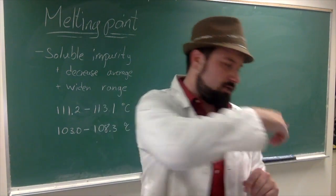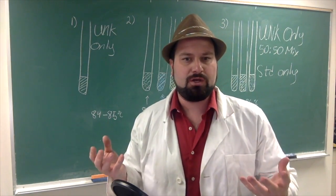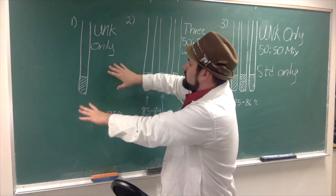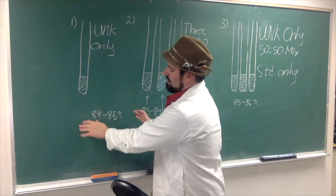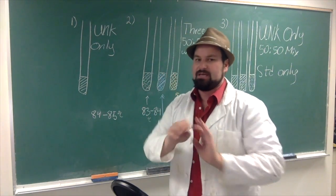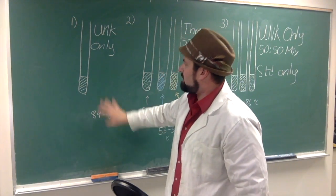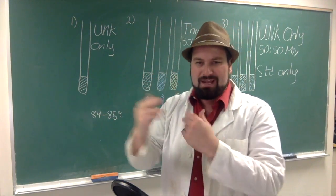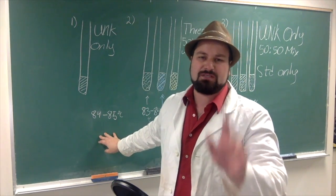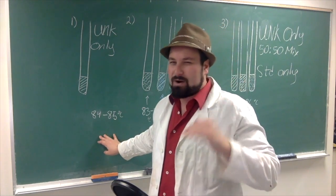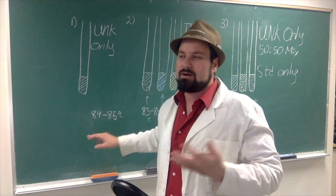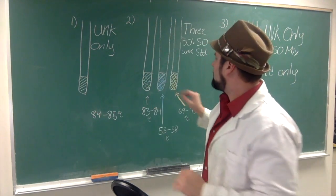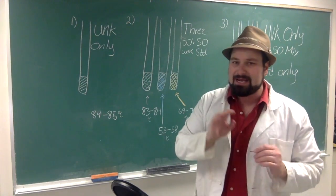How do we actually do it? So when you're actually doing this, your first run is going to be your unknown only. Let's say you get your unknown only and you end up with 84 to 85 degrees C — a great number. Now what you're going to do is take that, look at your table, and find things that are plus or minus from that. Because you're not going to do it perfectly the first time — it's not going to be exact. You just want to be in the ballpark, plus or minus a few degrees. You find three standards — maybe two — but three standards that you are going to pick, and you're going to make three mixes.